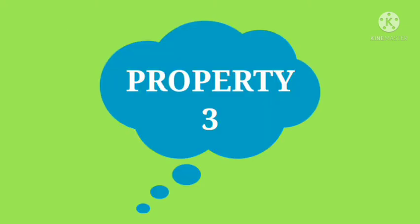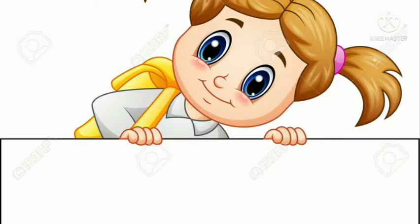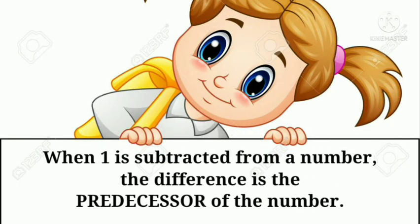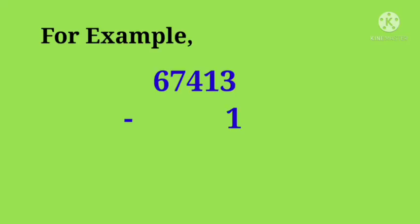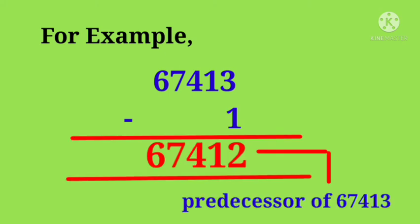Property 3: When 1 is subtracted from a number, the difference is the predecessor of the number. For example, 67413 minus 1 gives 67412, which is the predecessor of 67413.